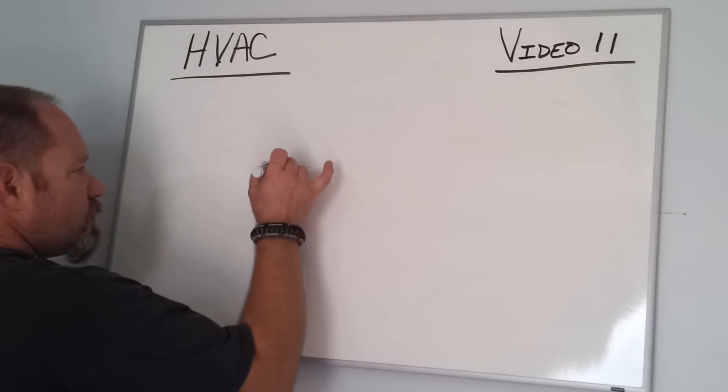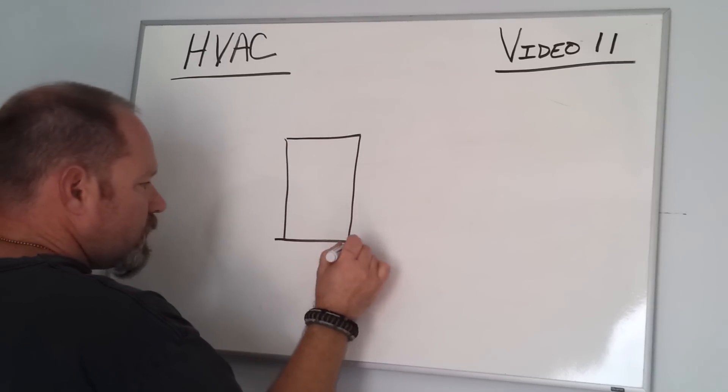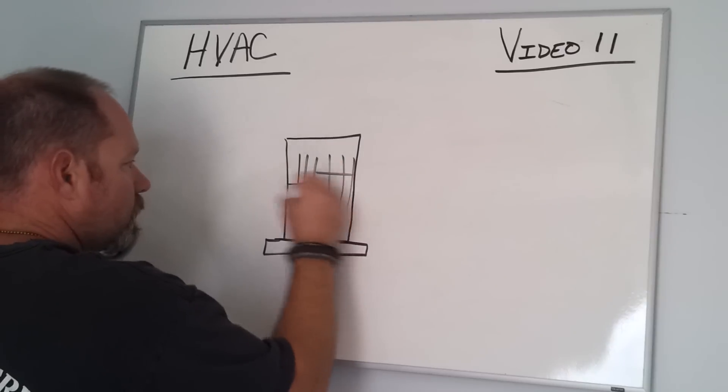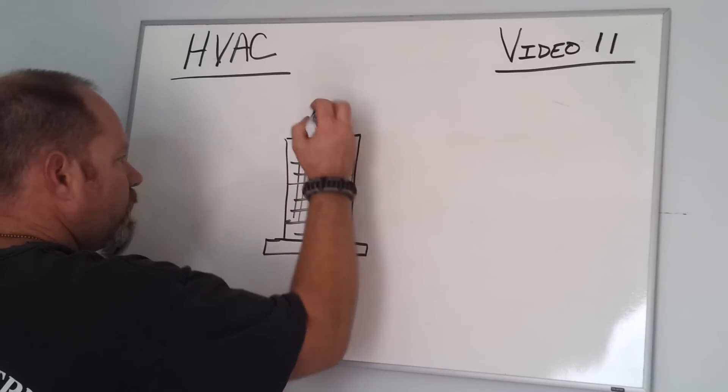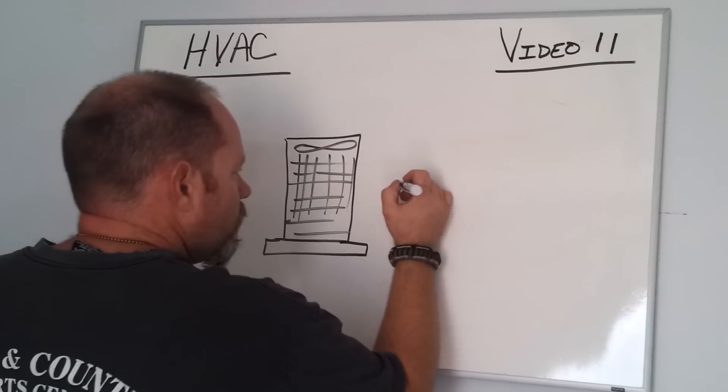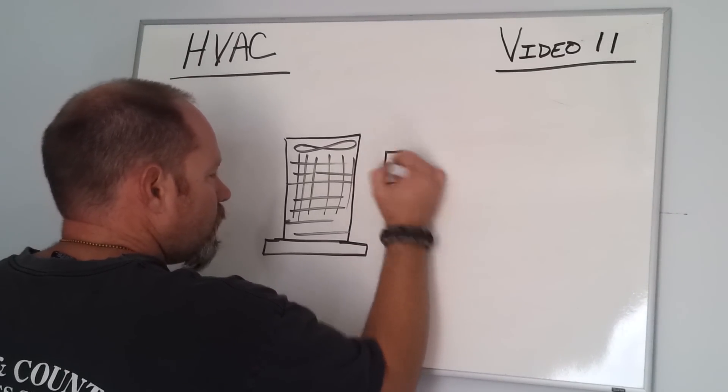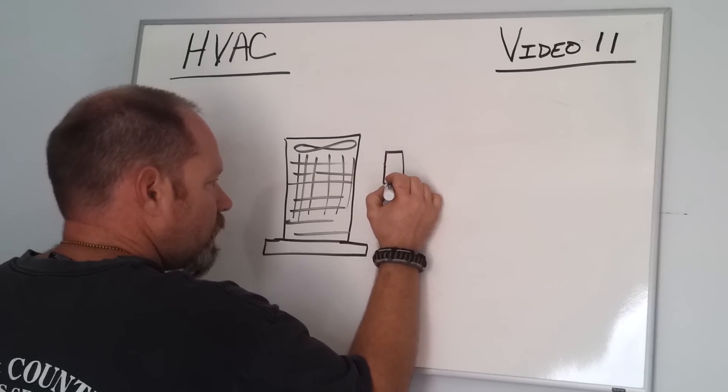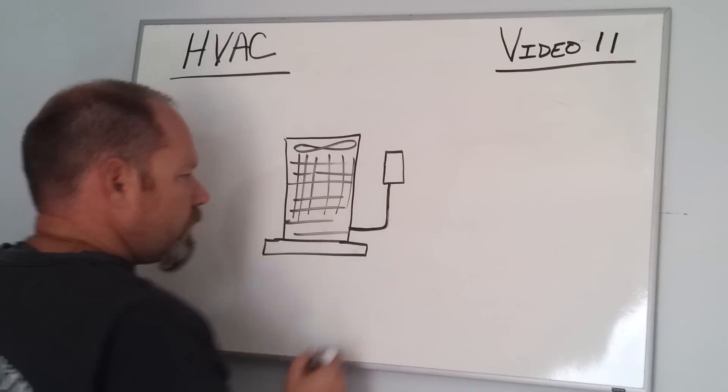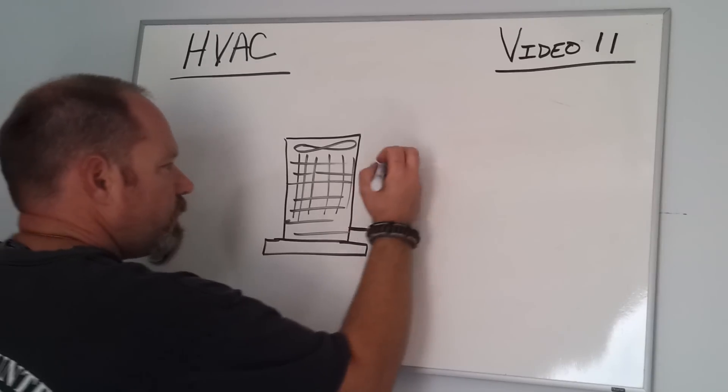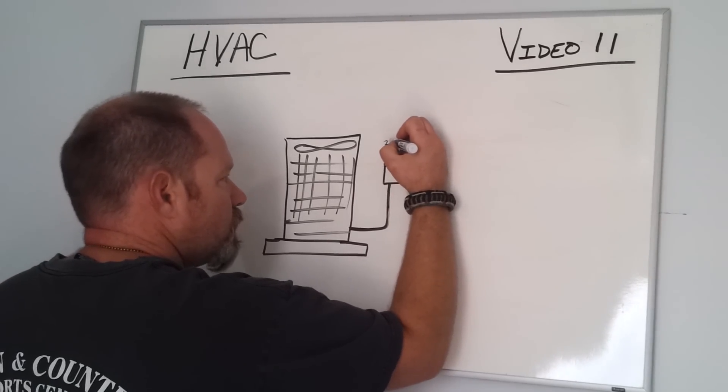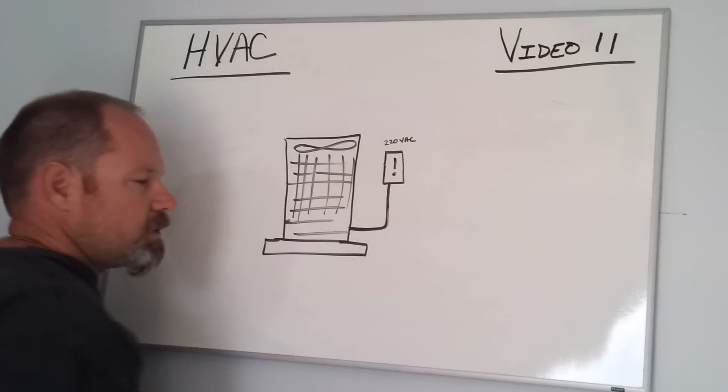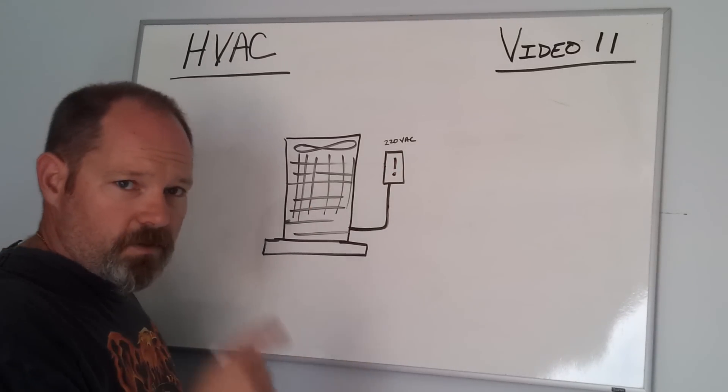If you're outside looking at your air conditioner, typically you're going to see some type of outdoor unit sitting on some type of pad like this. I'm just going to quickly draw in our fins and there should be a fan at the top. You should see what's called a disconnect on the wall and there should be a big conduit coming out and wiring in here. This is going to be 220 volts AC. So let's put a big exclamation point on that. Don't get in there if you don't know what you're doing.